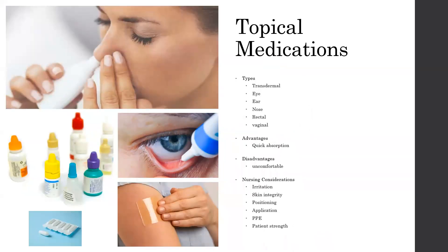Topical medications are those that go on top of the skin. The different types include transdermal, like the transdermal patch shown in the picture. It can also be administered through the eye — either eye drops or eye ointment — through the nose, through the ear, rectally, or vaginally. The advantages of topical medications are that they often have quick absorption, but the disadvantage is that they can be uncomfortable both to administer and to have.